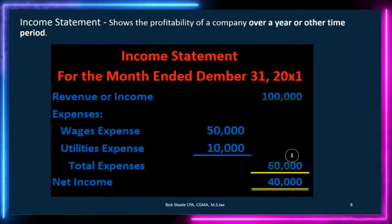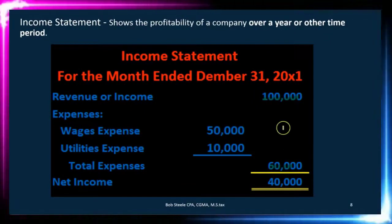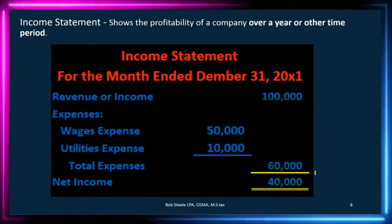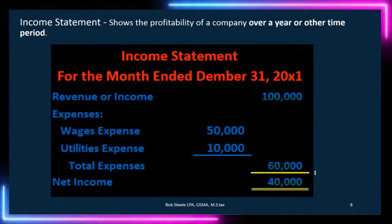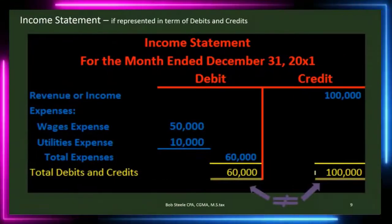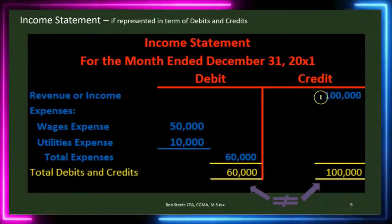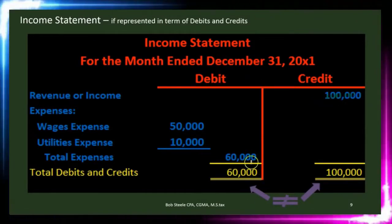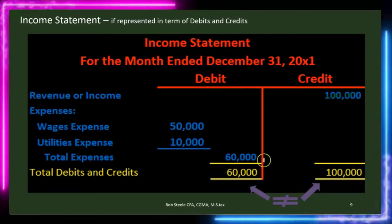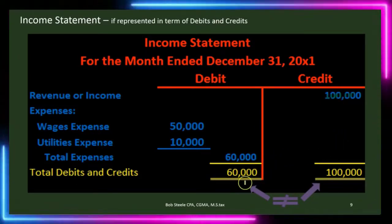On the income statement we have revenue and expenses. We calculate: how much did you make, and how much did it cost to generate that revenue in terms of expenses? Therefore, revenue minus expenses gives us our net income. You don't see debits and credits on the financial statement because we give it to people who may not know debits and credits. If we looked at the income statement in debit and credit format using a T-account, revenue would be a credit and expenses would be debits. The credits beat the debits by the amount of net income.